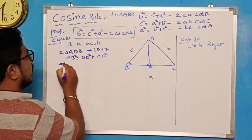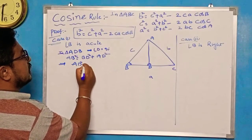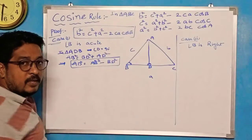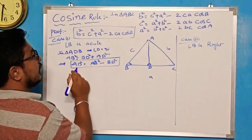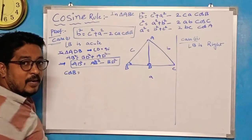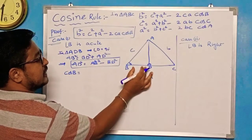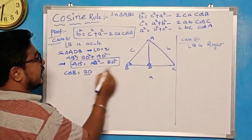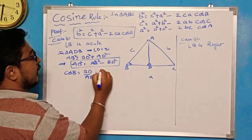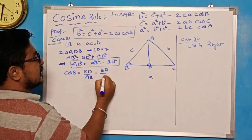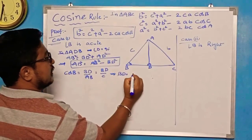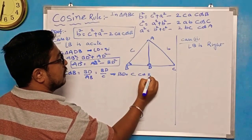Next, for angle B in triangle ABD, cosB = adjacent side / hypotenuse = BD / AB. Since AB notation is c, we get BD = c·cosB. That completes the first part in triangle ABC.